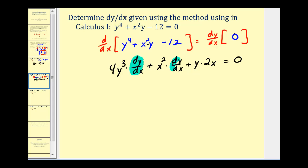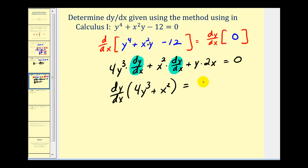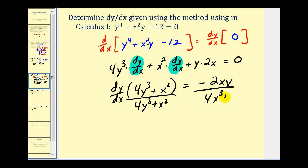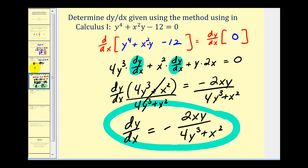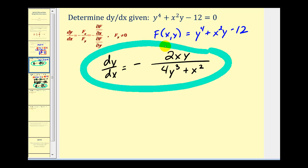We factor out dy/dx and move the remaining term to the right side, giving (4y³ + x²) dy/dx = -2xy. Dividing, dy/dx = -2xy / (4y³ + x²). As you can see, the first method was a lot easier and faster. The results from both methods are identical, confirming the formula works.